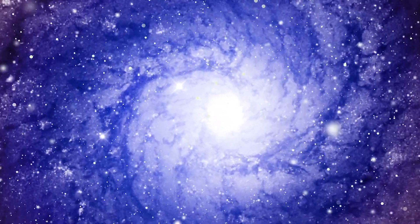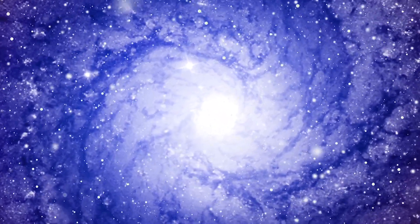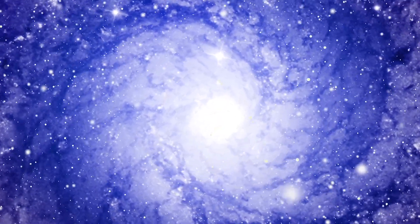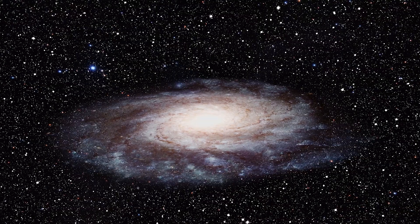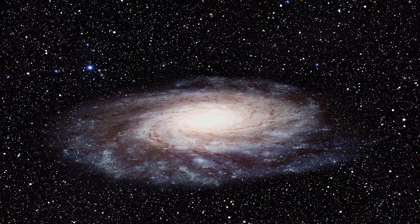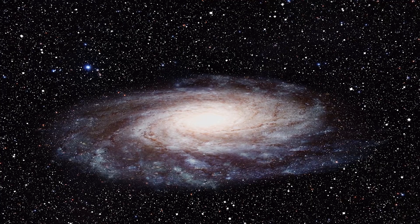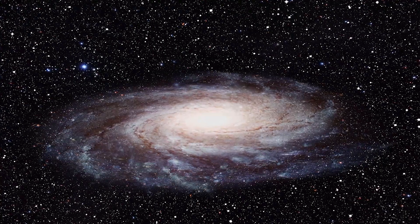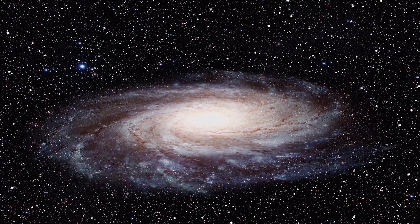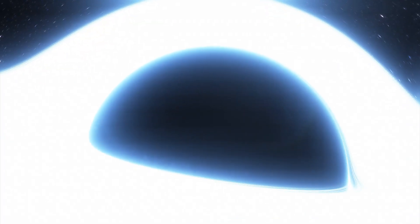Another technique used for detecting black holes is looking at how objects near one behave. For example, at the center of the Milky Way, we can see an empty spot where all of the stars are whirling around as if they were orbiting a really dense mass. That's where the black hole is.